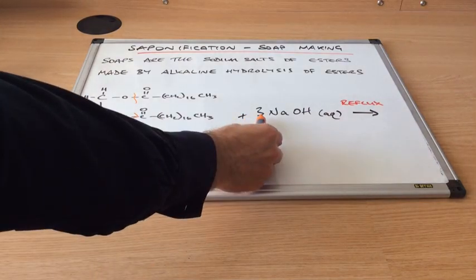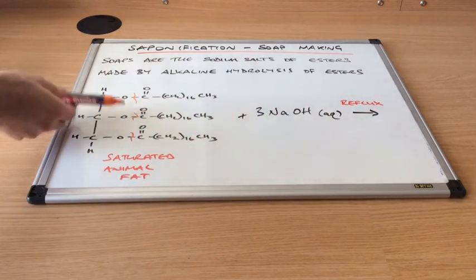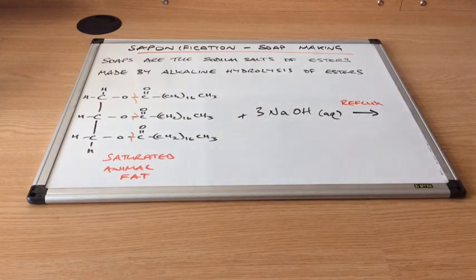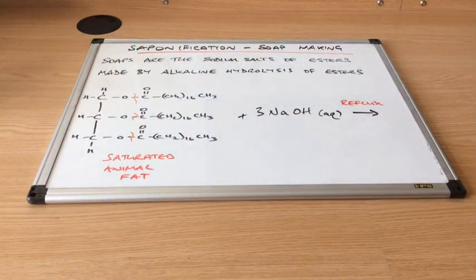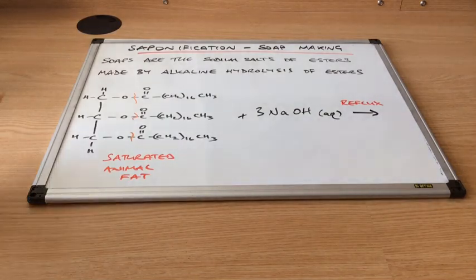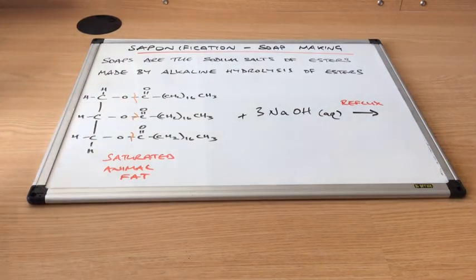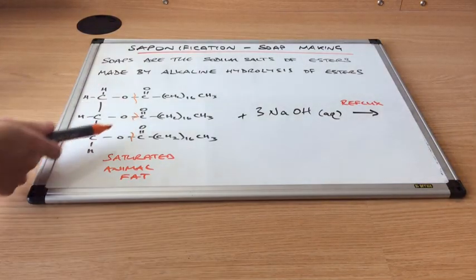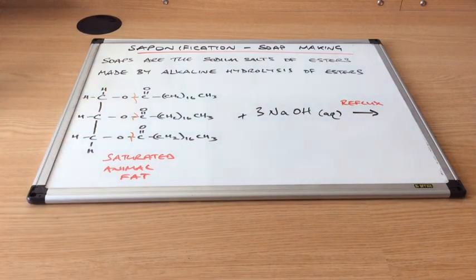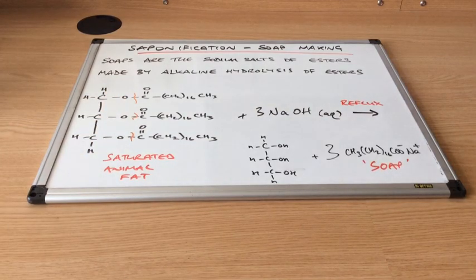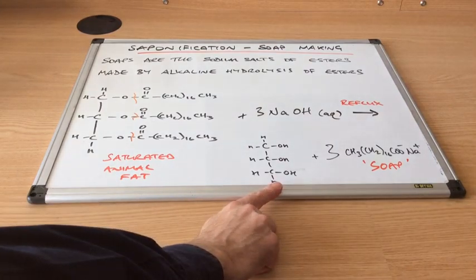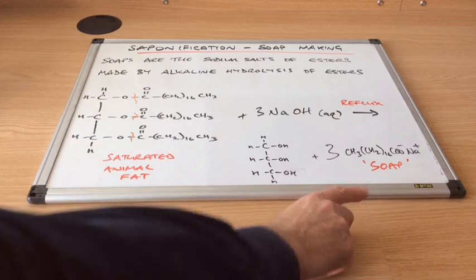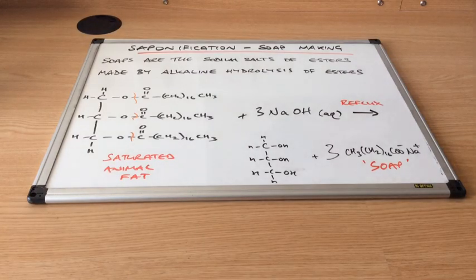And of course, we need three moles of sodium hydroxide because there are three ester bonds to break. So essentially, we're going to split this triglyceride up and produce three identical sodium salts. And we're going to make glycerol. So I've managed to squeeze the products at the bottom corner here. So here's the glycerol. And here are the three moles of the sodium salt of the ester. And that would be used as the soap.